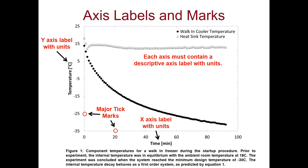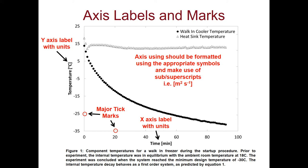The next part of a figure is including the axis labels and tick marks. Each axis should include a descriptive label and units. In this case, we have temperature in degrees Celsius and time in minutes. When we format the axis units, we should always make sure to use the appropriate symbols and use subscripts or superscripts as needed. In this case, we include the degree symbol for degrees Celsius, but we don't need any superscripts here.